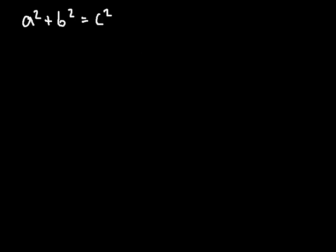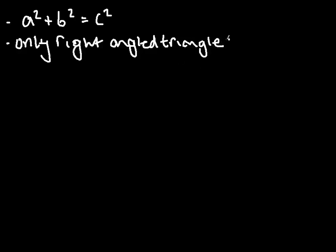So, a squared plus b squared equals c squared is the formula of Pythagoras' Theorem, and we need to remember that Pythagoras' Theorem can only be applied to right angles. So, only right angled triangles, so we need to know that.